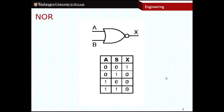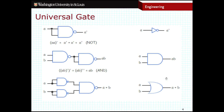So why do we call these universal gates? There's actually a very good reason — with these gates you can construct any of the other gates we've already been talking about in this course. If we take NAND gates, for example, I can take a NAND gate and turn it into an inverter, an AND gate, or an OR gate using the configurations shown here.